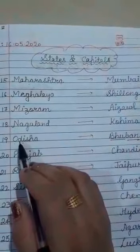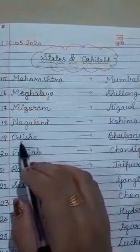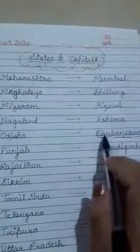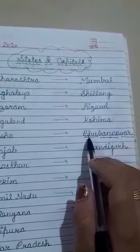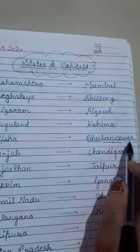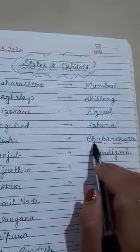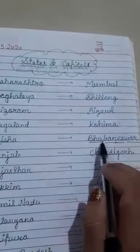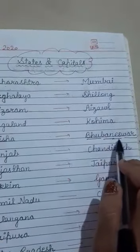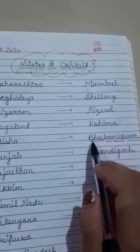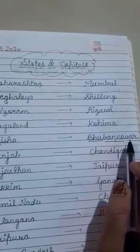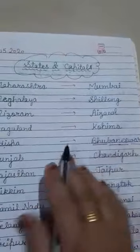The 19th state is Odisha, O-D-I-S-H-A, Odisha. Odisha's capital is Bhubaneswar, B-H-U-B-A-N-E-S-W-A-R, Bhubaneswar. We have divided this spelling into three parts because it is a very long spelling: B-H-U-B-A-N-E-S-W-A-R.